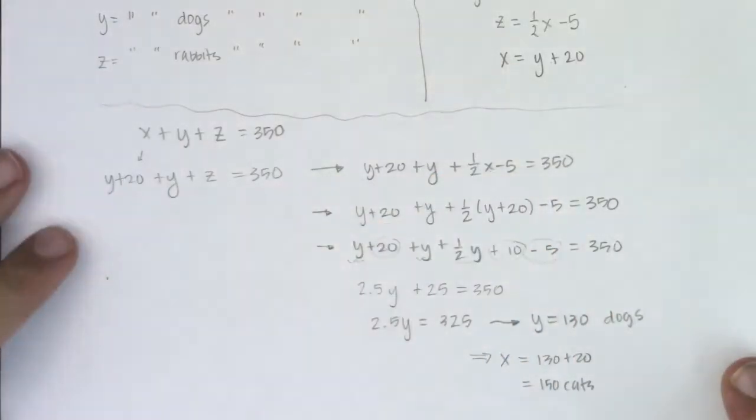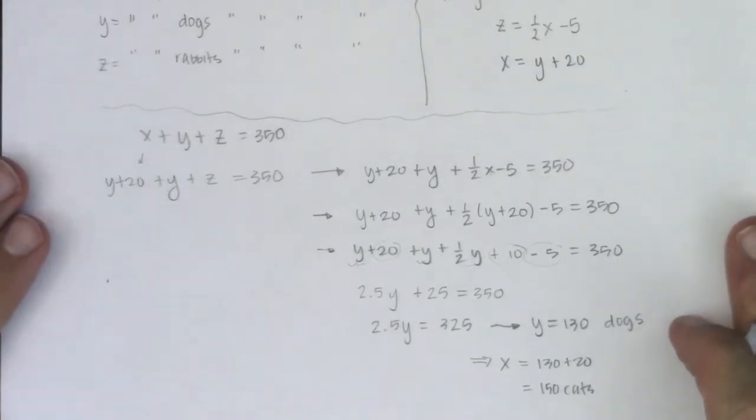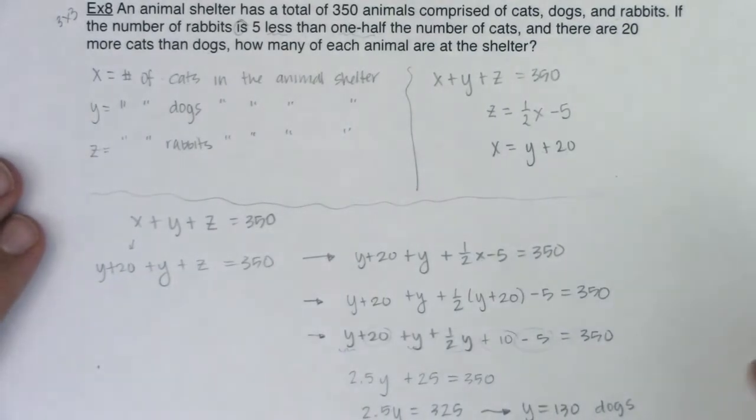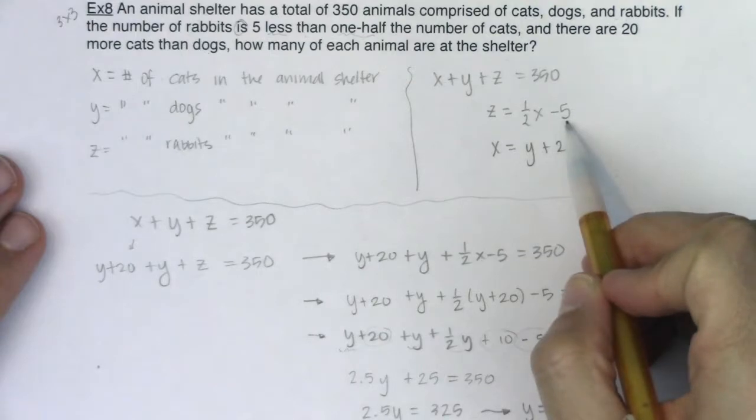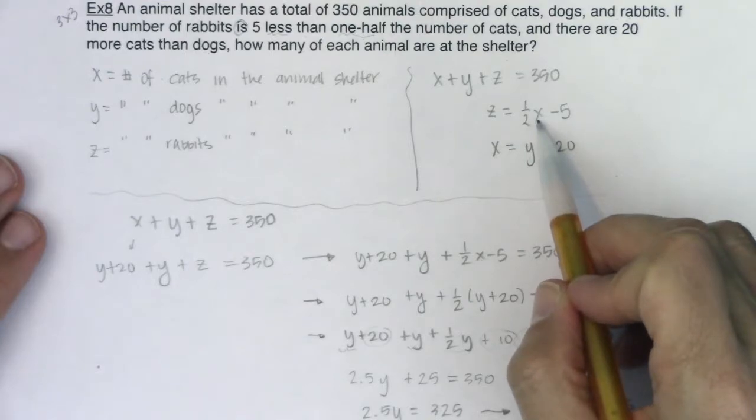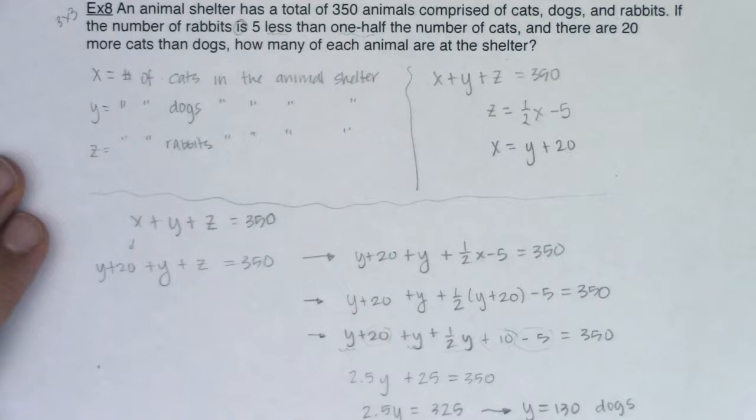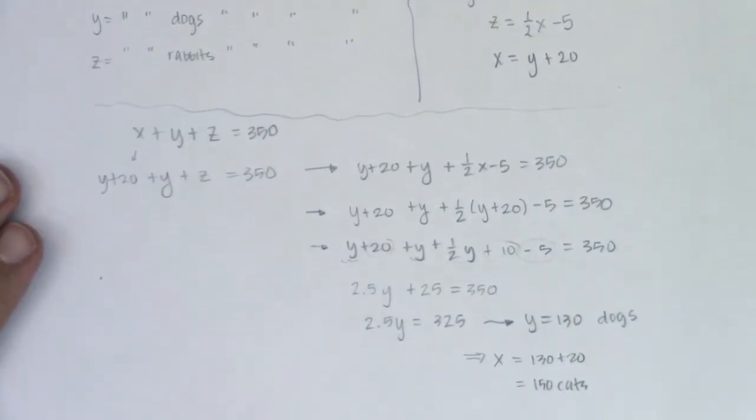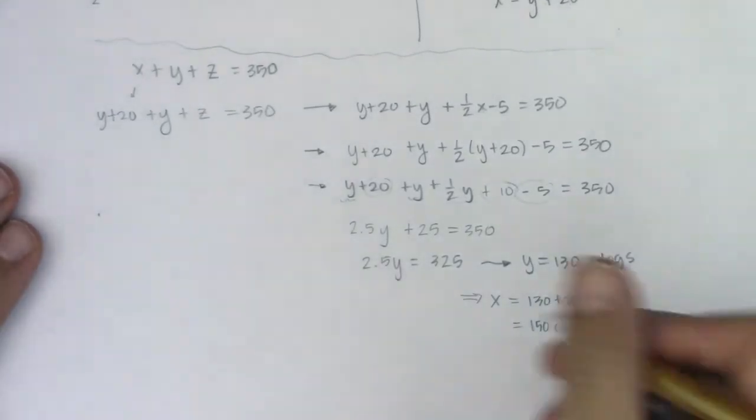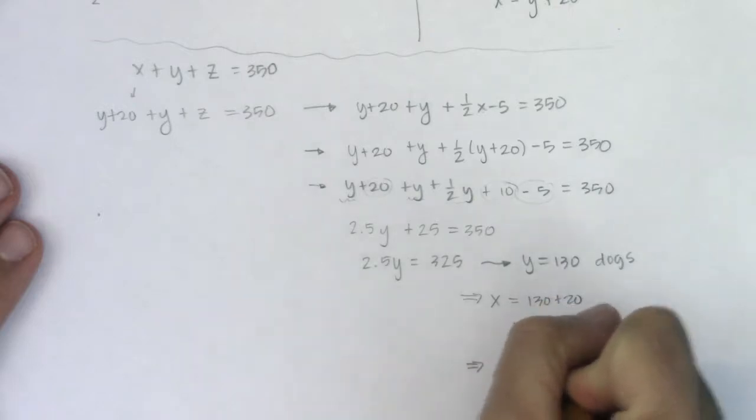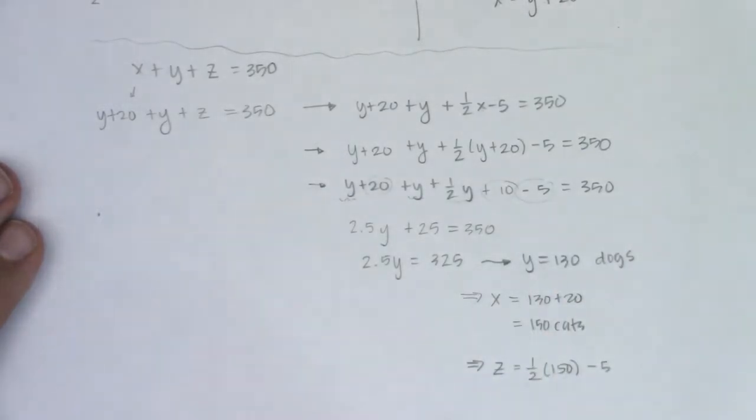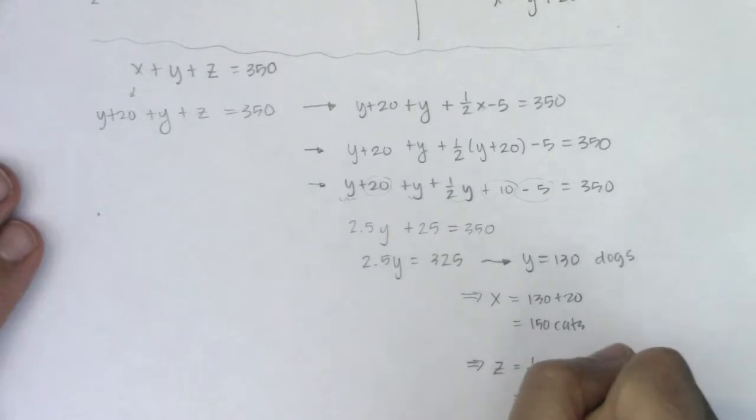I have x and y now, all I need is z. Let's see what formula we had for z. z is one-half x minus 5. We just found x—x was 150. So half of 150 is 75, and 75 minus 5 is 70. So z equals one-half times 150 minus 5. One-half times 150 is 75, 75 minus 5 is 70 rabbits.